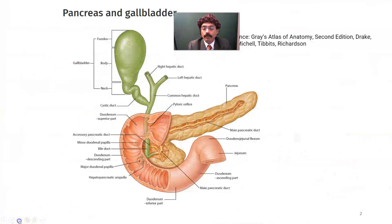So this is the gallbladder. There may be stone here and stone there. In western countries we have cholesterol stones, while pigment stones are very common in oriental or eastern countries.